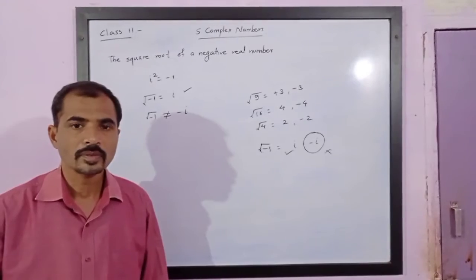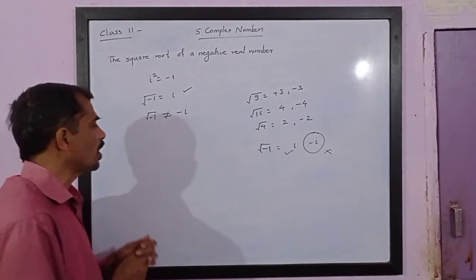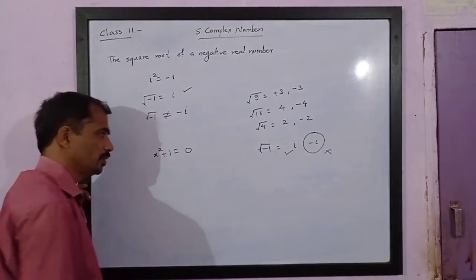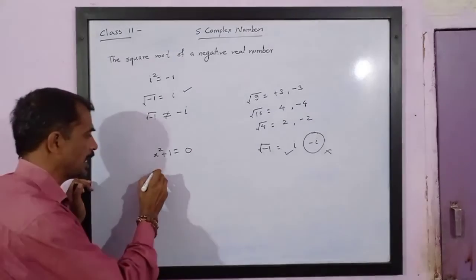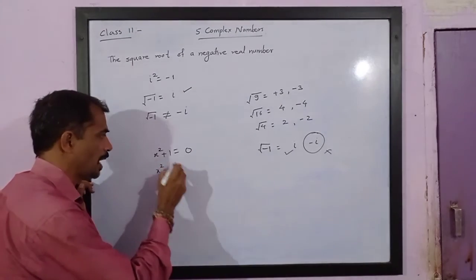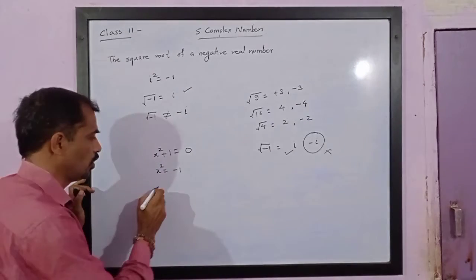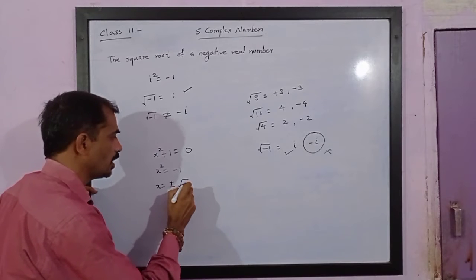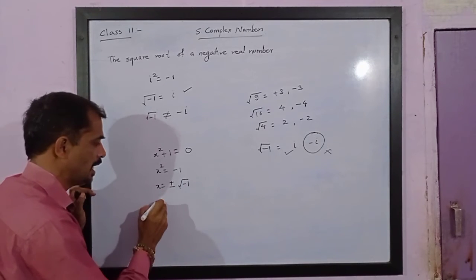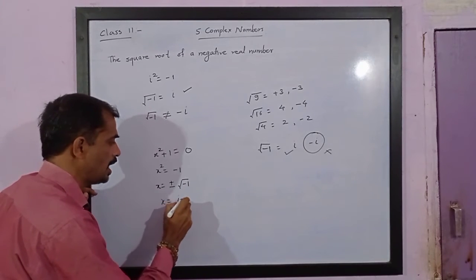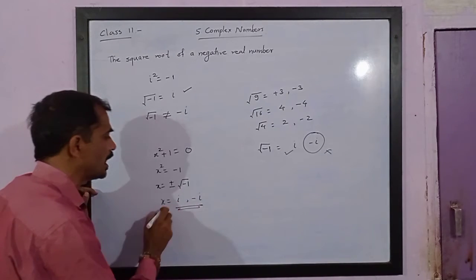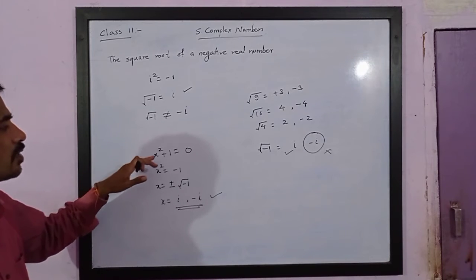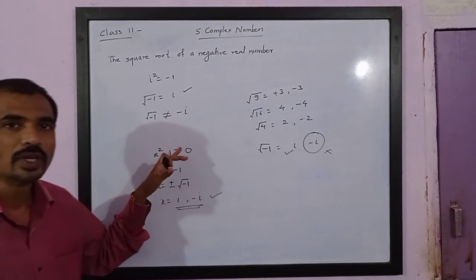However, if there is a quadratic equation x squared plus 1 equals 0 and you try to solve it, you get x squared equals negative 1, and by taking the square root you get x equals plus or minus root of minus 1. It means x equals i or x equals minus i, so in this case both roots exist for the quadratic equation x squared plus 1 equals 0.